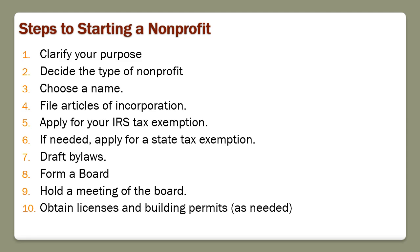Even if you already have a nonprofit organization, it's helpful to know these steps because your organization at one point did these things and you need to understand the legal implications. Step one: clarify your purpose — the IRS must verify your purpose fits their standards for tax-exempt organizations. Then decide the type of nonprofit, choose a name, file articles of organization with your state, apply for IRS 501(c)(3) tax exemption, apply for state tax exemption, draft bylaws, form a board, hold a board meeting, and obtain licenses and building permits.